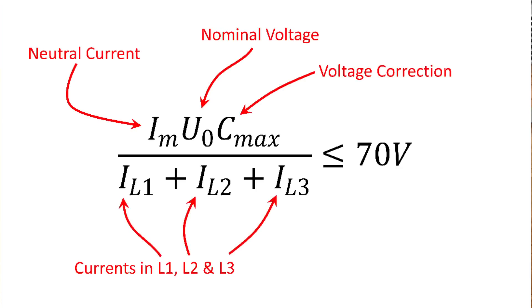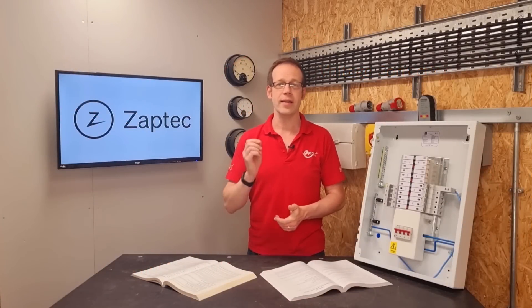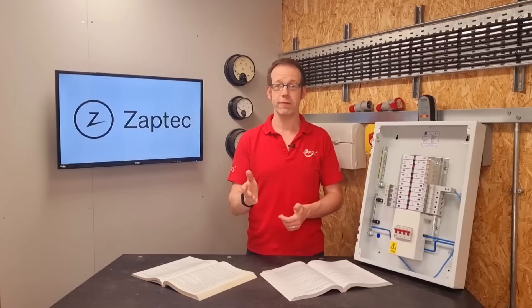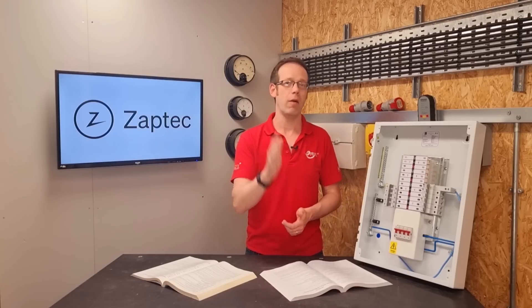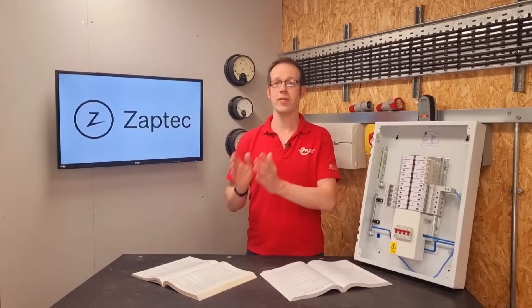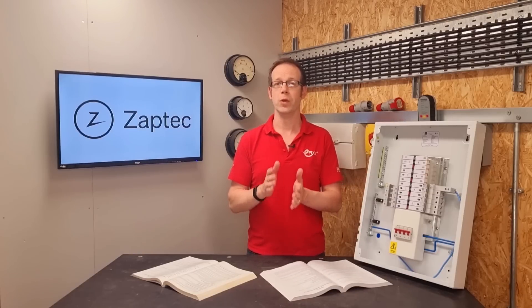These are multiplied together and then the division part on the bottom row is just the three currents in the three phases added together. So all this is doing is indicating that the maths on the left should be less than or equal to 70 volts. So the annex is saying that if that formula is true and the maths is less than or equal to 70 volts when a PEN fault occurs, then the installation will be safe. Importantly however, it's also saying that the opposite is the case, and if the maths on the left is more than 70 volts then the installation will not be safe.